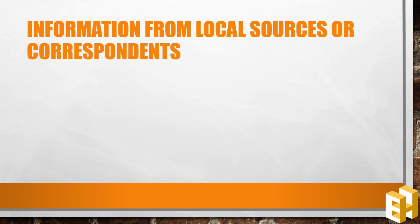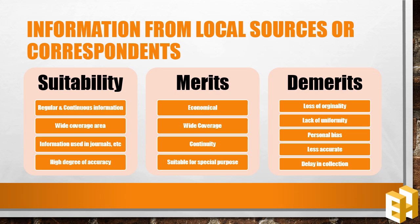The third method is information collected from local sources or correspondence. Under this, local people of an area are appointed by the investigator to collect the data on his behalf. The method is suitable when regular and continuous information is needed, the area of investigation is large, the information is to be used in journals, magazines, radio etc., and a high degree of accuracy is required. Merits are: it is effective in terms of time, money and efforts; it allows wide coverage; correspondence provide information on a continuous basis; and it is suitable for special purpose investigations like index numbers of agricultural prices.